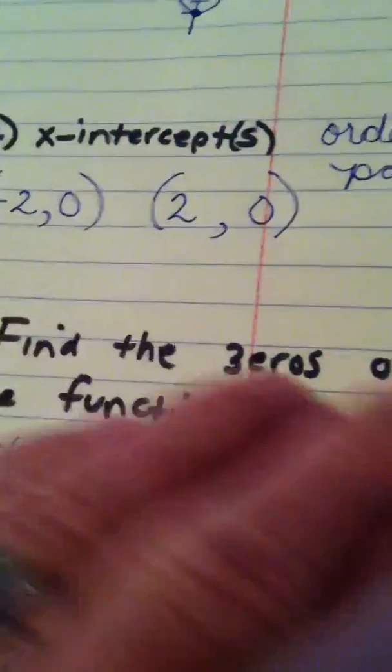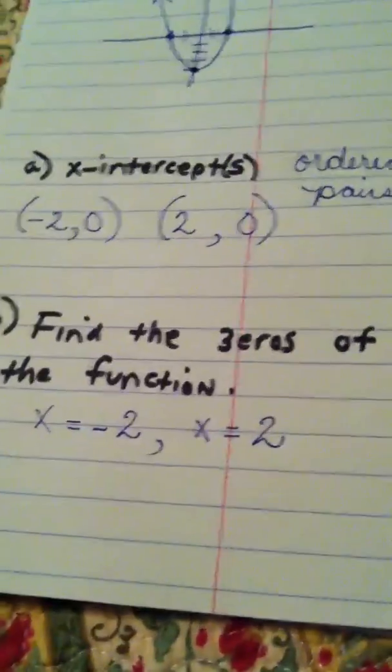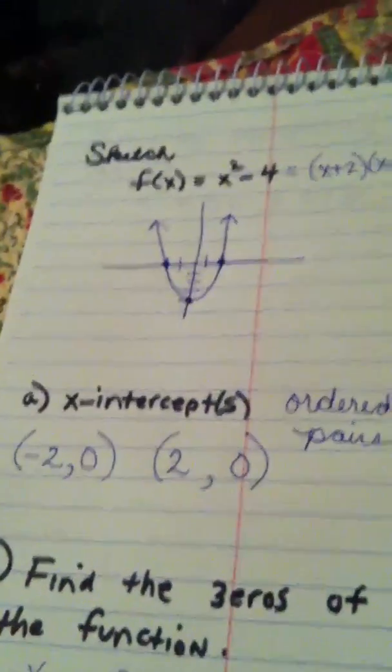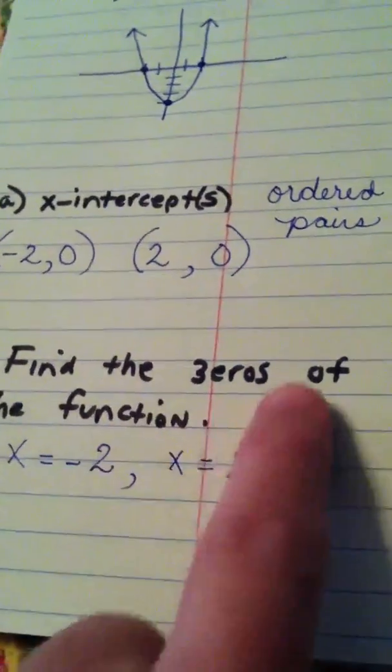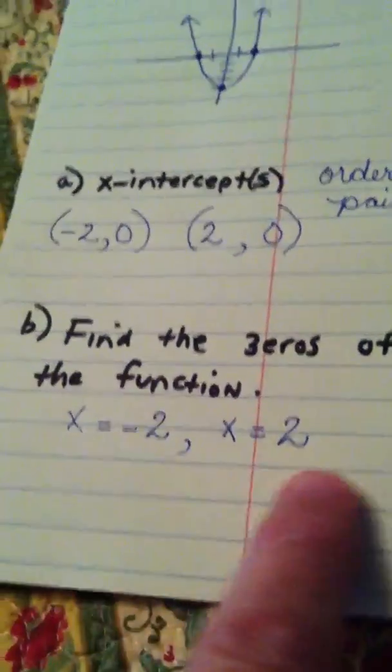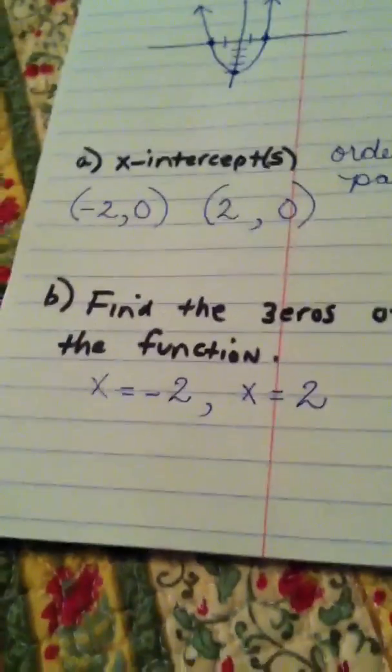All right? So, anytime you're looking for the zeros of a function on a graph, you're looking at the place where the graph crosses the x-axis, and you're looking at the x values only. Those are called the zeros. If a graph does not cross the x-axis, then it has no real zeros.